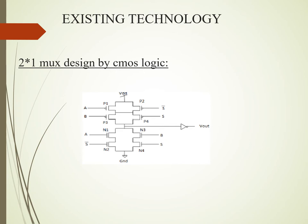Based on the Boolean function of the multiplexer, we design the circuit. For a 2x1 multiplexer, there are two inputs, one output, and one selection line. If the selection line is zero, the first input is taken as the output. If the selection line is one, the output is the second input. The output is placed between the PMOS and NMOS sections.